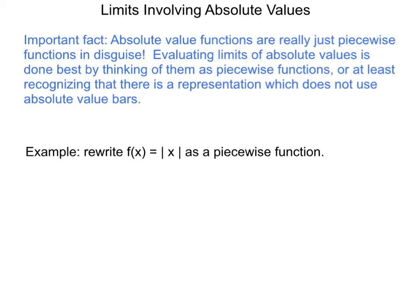Or at least thinking that there's a different way to represent that absolute value. Because the reality is, if you have an expression like the absolute value of x plus 2 divided by x plus 2, you are not allowed to cancel those x plus 2s, because they're not the same. One of them is an absolute value, one of them is a nice normal x plus 2. Those are not the same function.